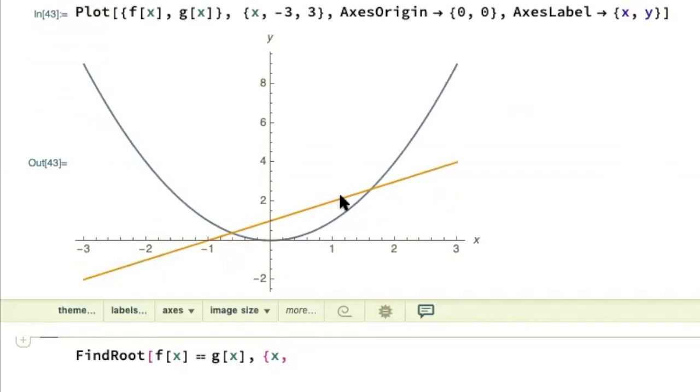I'm going to go ahead and hit shift enter and we have a very pretty looking graph. And you can see here that there are two intersection points. One is over here in the negative x values. One is over here in the positive x values.